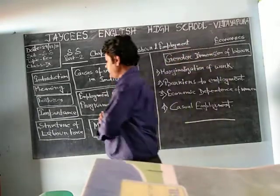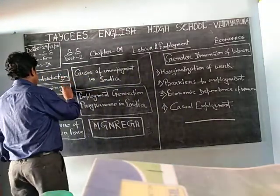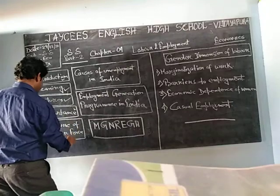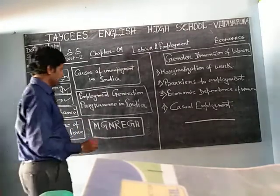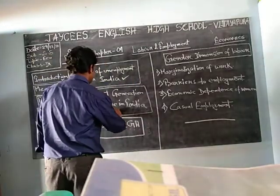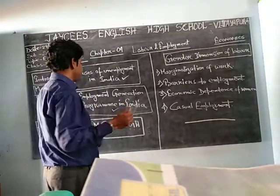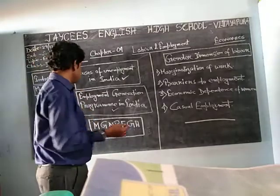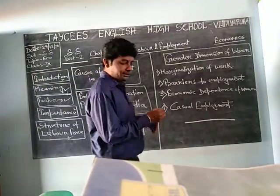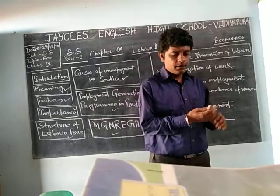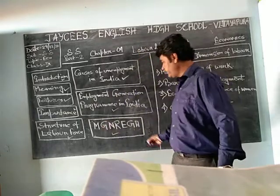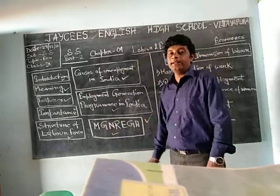In this chapter, these are the things we already have done: the introduction part, the meaning, the features, the importance, the structure of labor force, causes for unemployment in India, then employment generation — in the last two videos we covered how the government is implementing programs for employment generation in India. The last one was MGNREGA, that is Mahatma Gandhi National Rural Employment Guarantee Act — what it was, what the facilities are, and how to apply. Everything we have already studied in the last video.